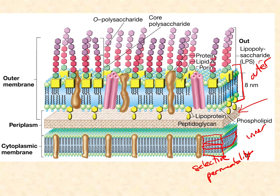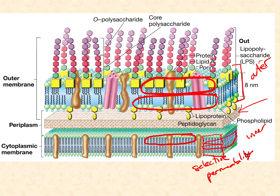This outer membrane is not exactly a phospholipid bilayer — it is a lipid bilayer and does have phospholipids. The inner leaflet, facing the periplasm, is almost exclusively phospholipids, just like a typical cytoplasmic membrane. But the outer leaflet is a mix of phospholipids and a separate molecule called lipopolysaccharide — a lipid connected to polysaccharide. The lipid component locks into the hydrophobic interior of the membrane, while the polysaccharide has polar covalent bonds and a whole bunch of negative charges, so it interacts with the water on the outside.